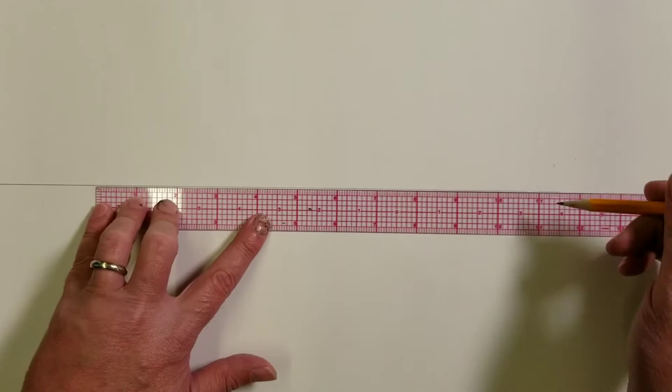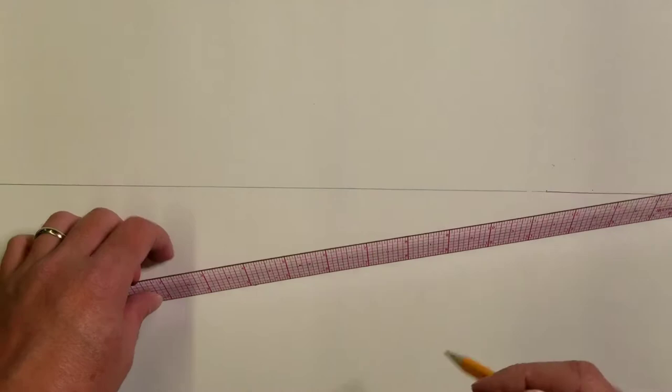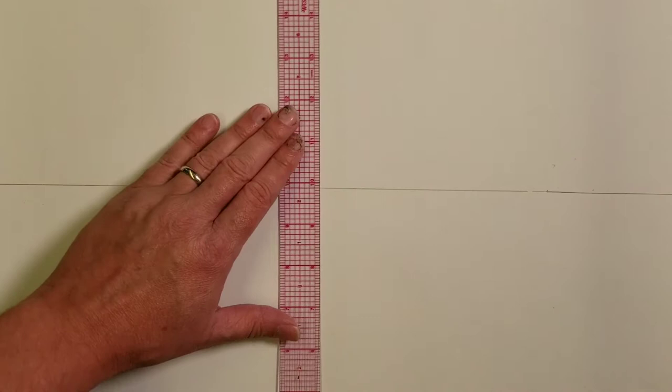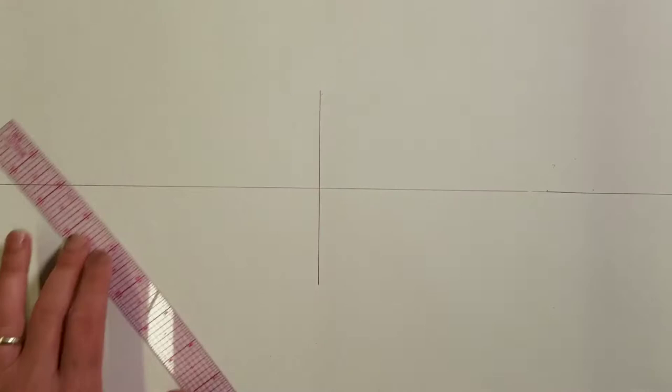You're going to need a ruler and a pencil to do this assignment. If you want to use a mechanical pencil, that would work great. And what we're going to do next is we're going to put the corner of our first building in our drawing.